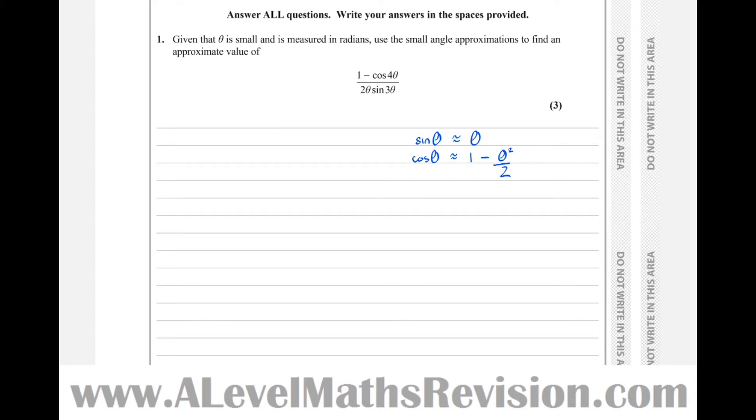So let's replace all of these trig expressions now for the small angle equivalent. So 1 minus cos of 4 theta becomes 1 minus, then 1 minus, and the angle here is 4 theta, not theta. So it becomes 1 minus 4 theta squared over 2, and that's all over 2 theta.